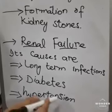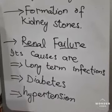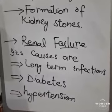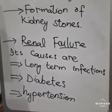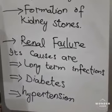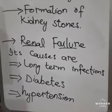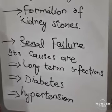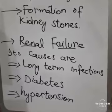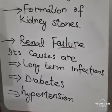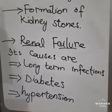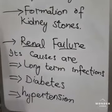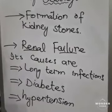Hypertension is a state of high blood pressure in the body. Sudden blockage of blood supply to the kidneys may also result in renal failure. If blood does not reach the kidneys properly, the normal working of the kidneys stops.